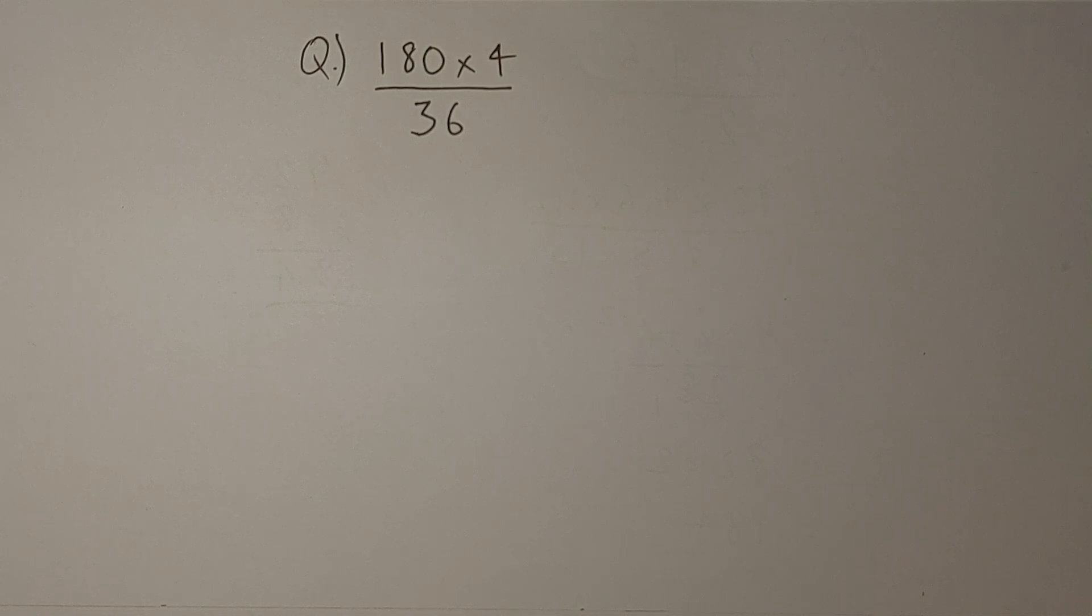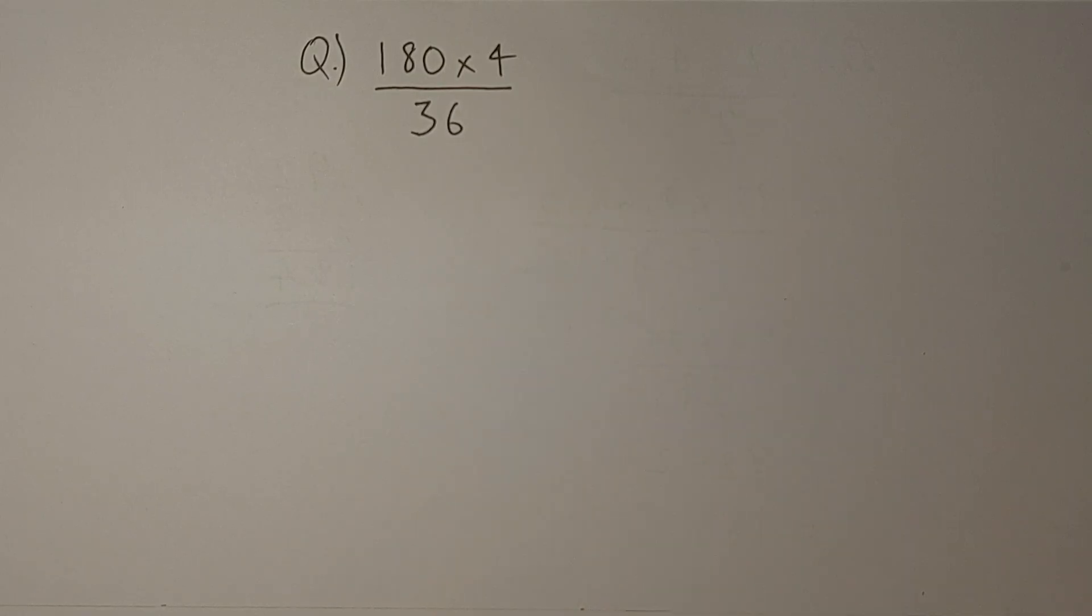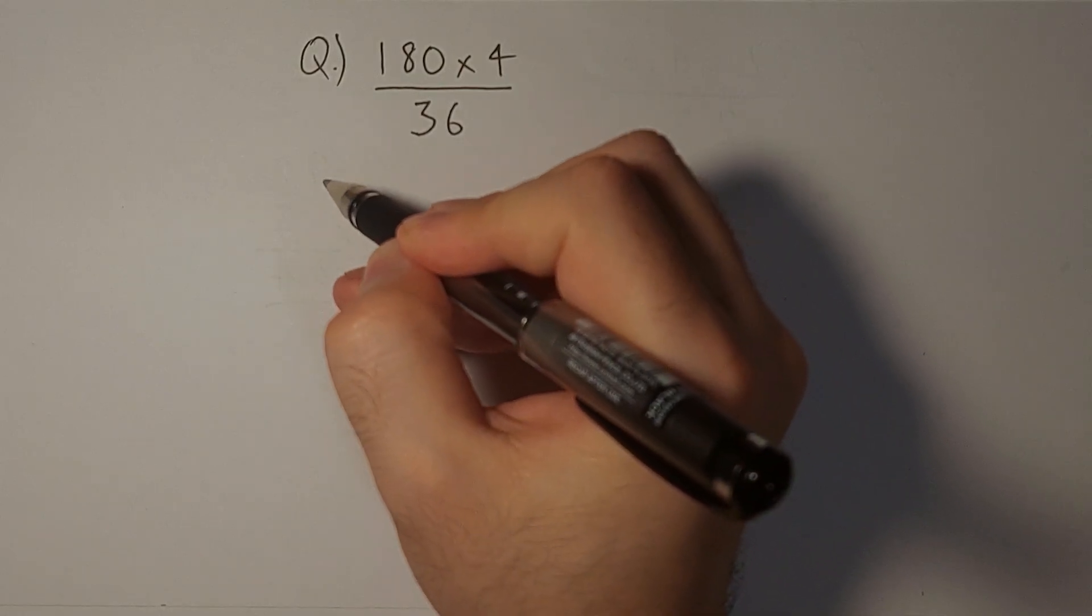The second question we have is 180 times 4 divided by 36. Now we have to look at this question and see if we can find multiples. If we look carefully we can see that 36 is a multiple of 4. 4 times 9 is 36.